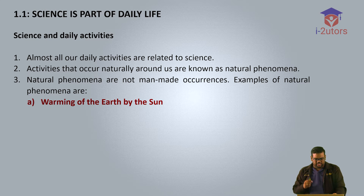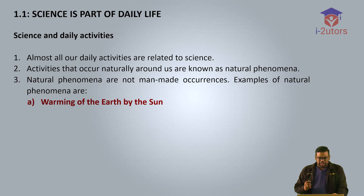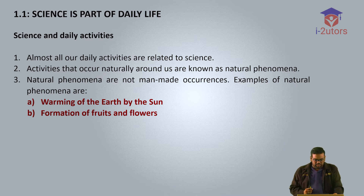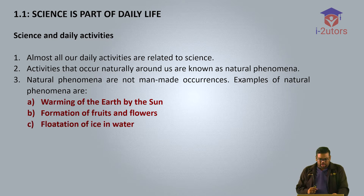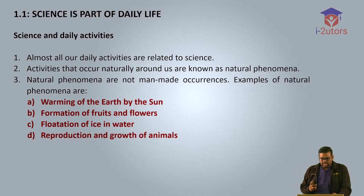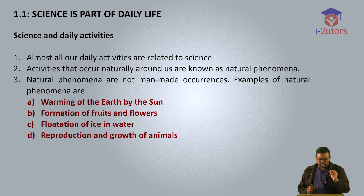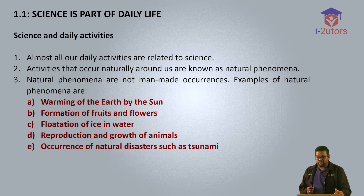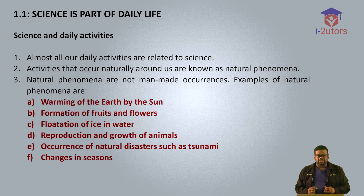The examples of natural phenomena are: number 1, warming of the earth by the sun; number 2, formation of fruits and flowers; number 3, flotation of ice on water; number 4, reproduction and growth of animals; number 5, occurrence of natural disasters such as tsunami; and number 6, changes in the season.